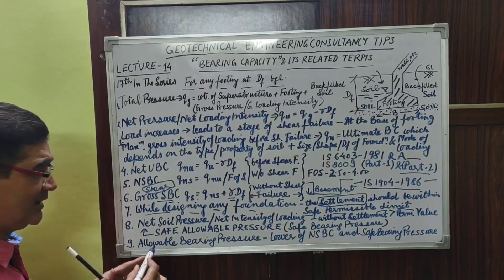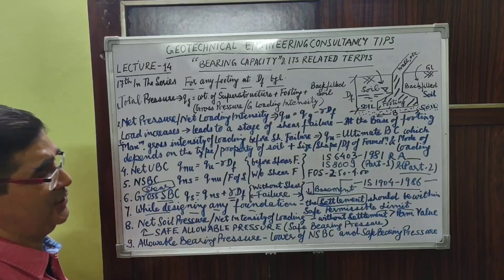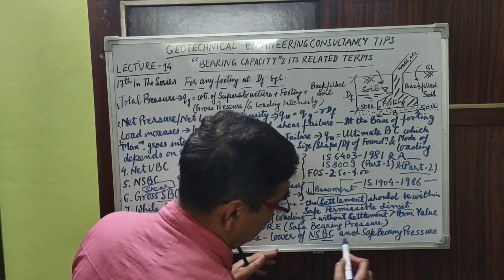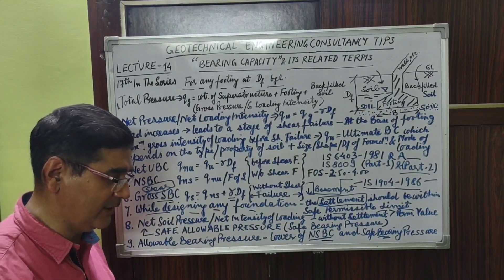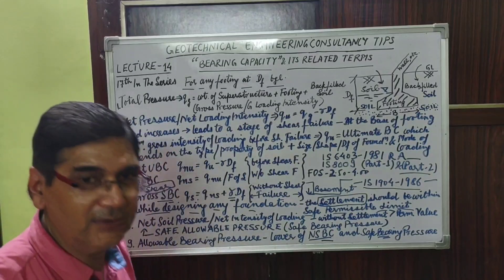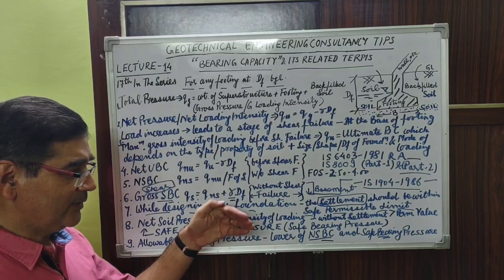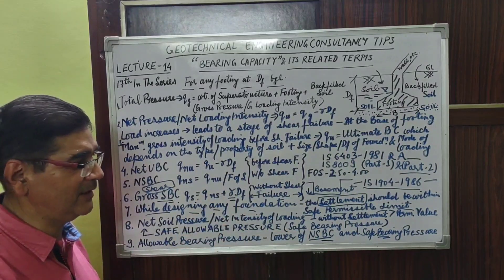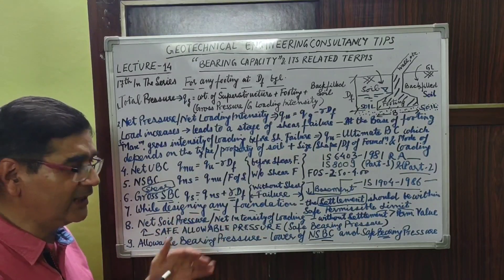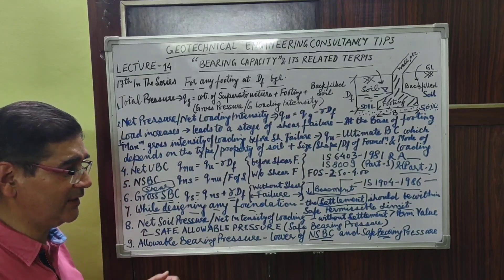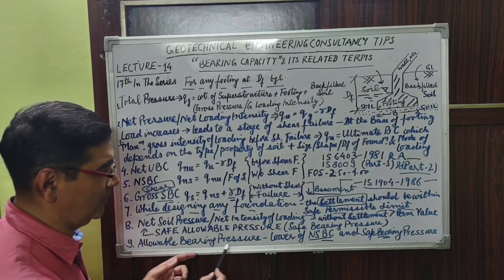What is finally termed as the allowable bearing pressure or allowable bearing capacity — as typically recommended in geotechnical investigation reports — is the lower of the net safe bearing capacity and the safe bearing pressure. In some cases, the settlement produced for net safe bearing capacity is within the limit, and then the net safe bearing capacity is recommended. In other cases, the settlement exceeds the permissible limit, and we reduce the net safe bearing capacity to bring settlement within limits — in that case, the recommendation is governed by settlement criteria, and the value is referred to as allowable bearing pressure or safe allowable pressure.